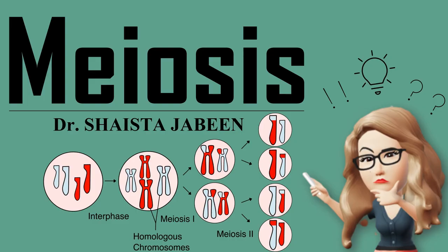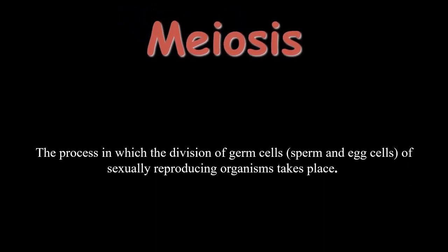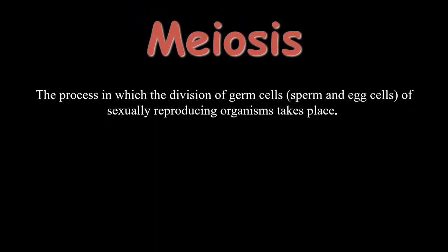Let us learn about meiosis. What is meiosis? It is the process in which the division of cells takes place — specifically the division of a special type of cells known as germ cells.